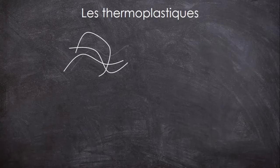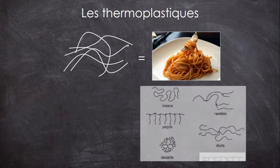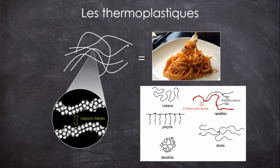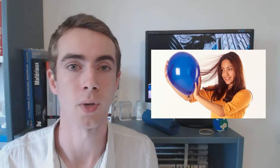Dans un thermoplastique, les chaînes polymères se présentent un peu comme un plat de spaghettis moléculaires, même si en vrai toutes les chaînes ne sont pas linéaires. Certaines présentent par exemple des ramifications, qui sont des sortes de branches. Mais qu'importe la configuration de chaque chaîne, ce qui est commun à tous les thermoplastiques, c'est qu'il n'y a que des liaisons faibles entre les chaînes. Ces forces qui s'exercent entre les chaînes polymères, et qui finalement assurent la cohésion du matériau, c'est presque la même chose que lorsqu'un ballon frotté sur vos cheveux colle au plafond. En fait ce sont des charges électriques qui permettent de tenir. Il n'y a pas de véritable accroche, comme avec un collage par exemple.